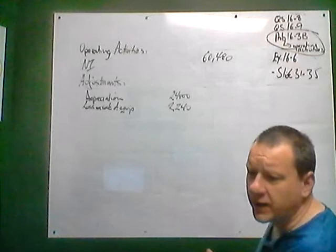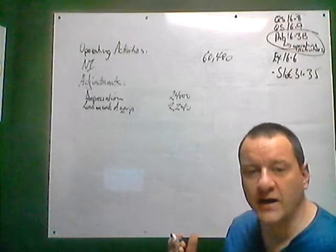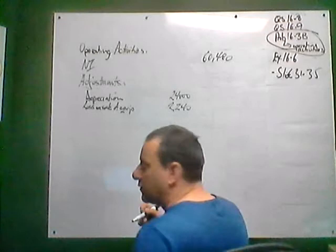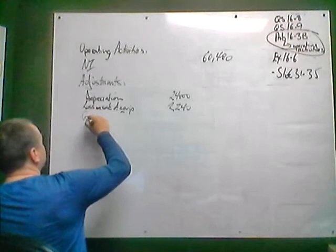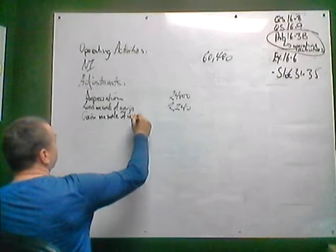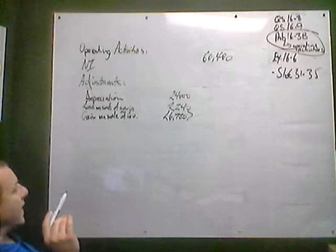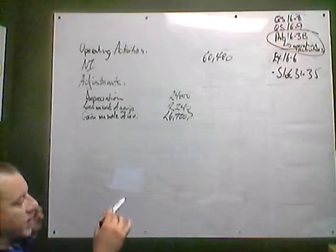So we're going to subtract that gain — $6,720 — because we're only worried about cash. We're going to recognize the $16,800 in cash proceeds that we received in the investing section. So we subtract the gain on the sale of the non-current investment. Now we've added back all the items on the income statement. Let's go look at our balance sheet accounts.